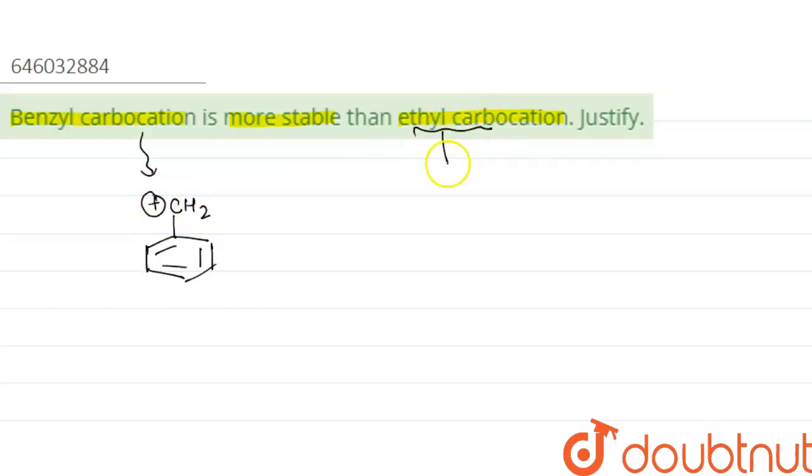And in case of ethyl carbocation, we have the structure CH3-CH2 and there is a positive charge here.